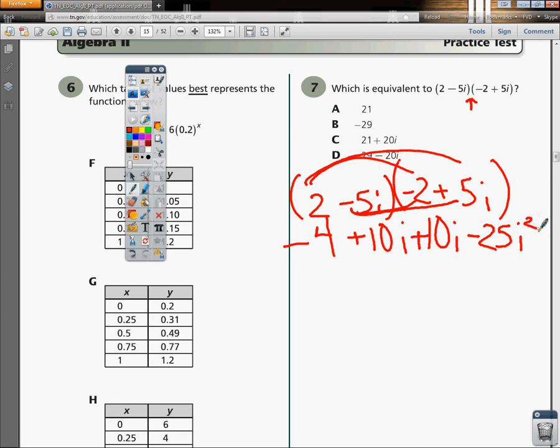And what you should know about i, of course, is that it's an imaginary number. The i is the equivalent of the square root of negative 1. Now, if I have the square root of negative 1,